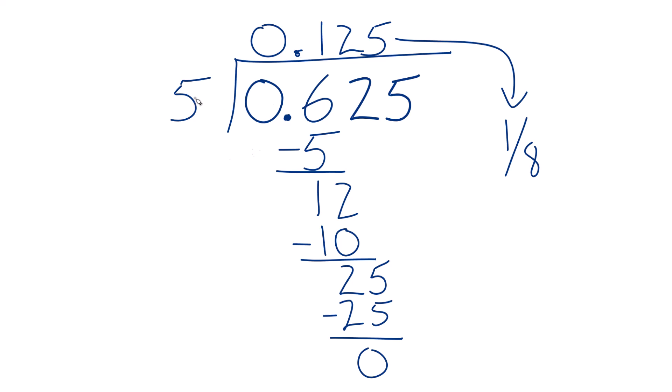And because we have 5, 5 times one-eighth, that's five-eighths. 0.625, that's actually the fraction five-eighths, which is also very common in mathematics.